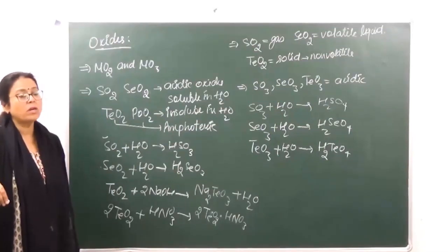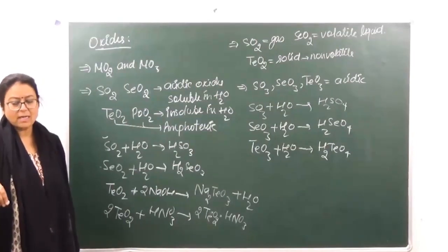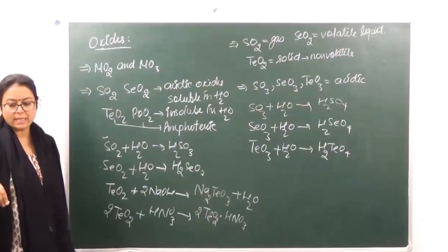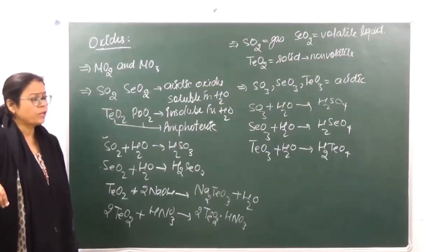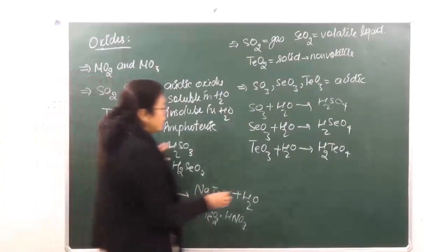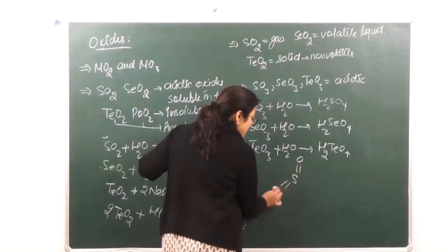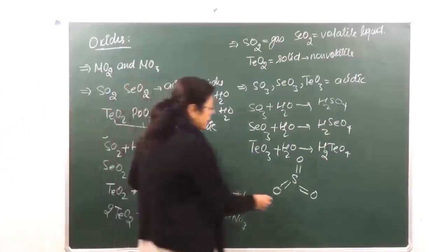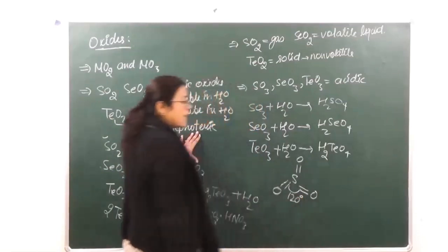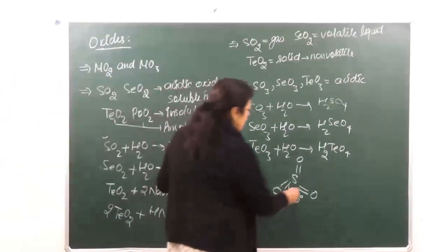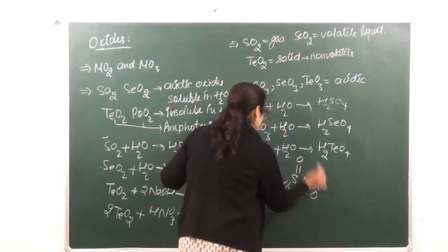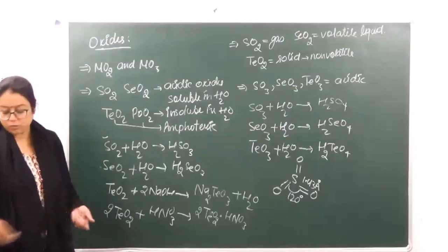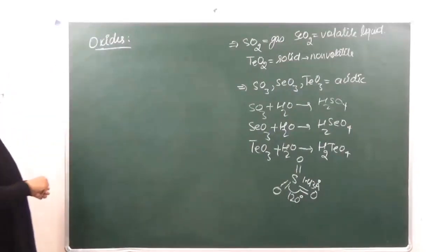The acidic character keeps on decreasing down the group. So sulfur trioxide is the most acidic, then selenium trioxide, then tellurium trioxide which is the least acidic. Now when we look at the structure of sulfur trioxide, it has a triangular planar structure with a bond angle of 120 degrees and a bond length of 1.43 Ångström.